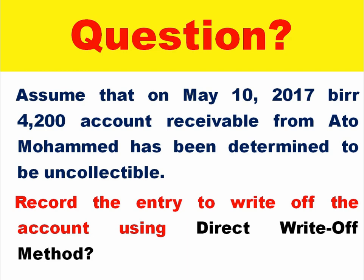Assume that on May 10, 2017, the $4,200 account receivable from Muhammad has been determined to be uncollectable. The question is: record the entry to write off the account using the direct write-off method.